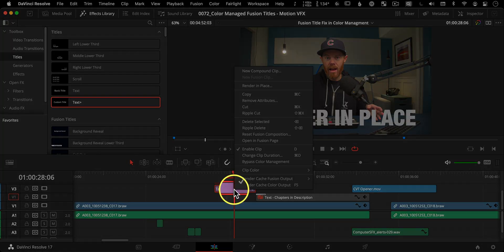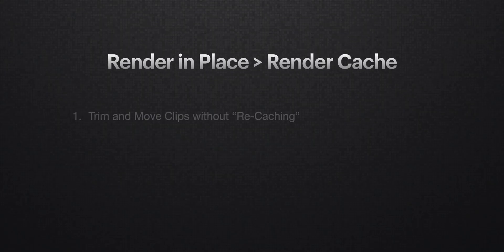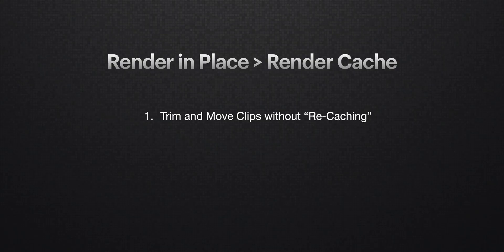Render in Place helps you get real-time playback in your timeline with any clips that have intense effects. After you right-click and choose to render in place, Resolve swaps the original clip with the rendered file. Two ways this method beats the good ol' rendered cache: one, you can trim and move clips without needing to recache them — no more red bars at the top of your timeline. And two, you can use it in any other project or timeline because it's just a new video clip.